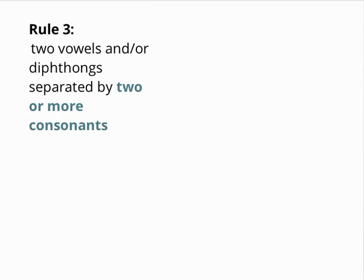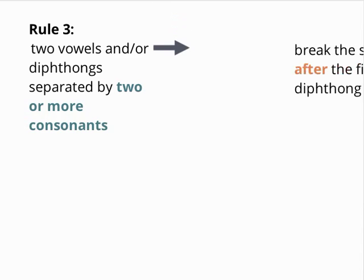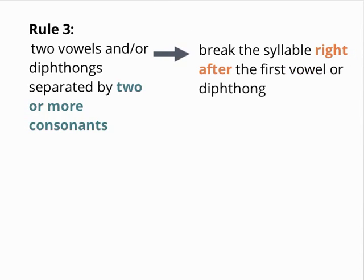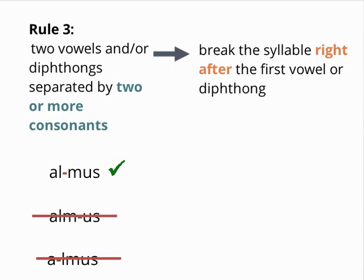Third, two vowels and/or diphthongs separated by two or more consonants. This case is a bit trickier. In general, the consonants get split up between the syllables, usually with only the last joining the second syllable. Thus, al-mus, not alm-us or a-lmus.